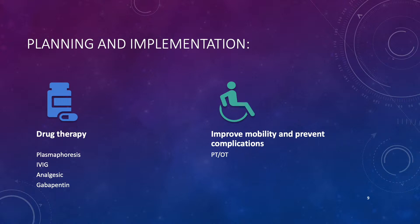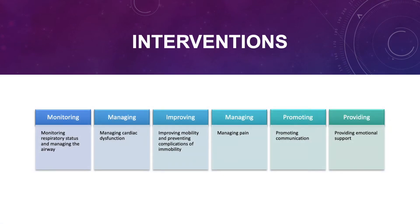Another planning and implementation hallmark is to improve mobility and to prevent complications. To do this, you should confer with physical therapy and occupational therapy. Continuing with important interventions: monitoring respiratory status and managing the airway, managing cardiac dysfunction, improving mobility and preventing complications of immobility, managing pain, promoting communication, and providing emotional support are all priority interventions for the patient who has GBS.